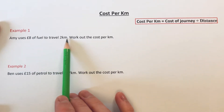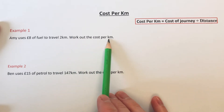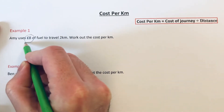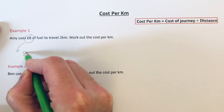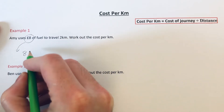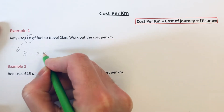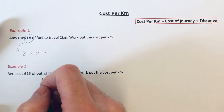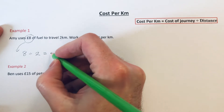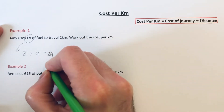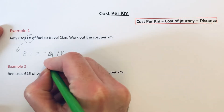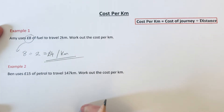Amy uses eight pounds of fuel to travel two kilometres, so we've got to work out the cost per kilometre. What you need to do is first of all write down the cost of the journey, which is eight pounds, and then divide that by how many kilometres the journey is, which is two. Eight divided by two is four, so the cost per kilometre is four pounds per kilometre.